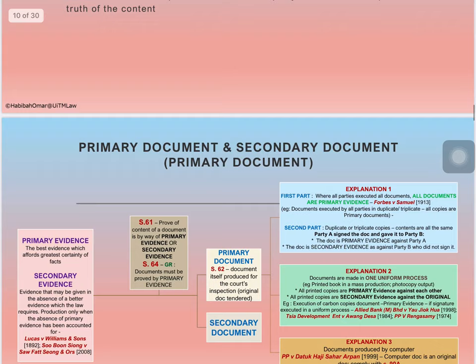Since it is important to tender a document — either primary or secondary — there is a need to know what is a primary document and what is a secondary document. The definition of a primary document is explained under Section 62 of the Evidence Act. Primary evidence is tendering the best evidence which affords greater certainty of facts, and in the context of documentary evidence, you are producing the original document — that is the document itself produced for the inspection of the court. The general rule under Section 64 is proof of document by primary evidence — documents must be proved by primary evidence except in the cases hereinafter mentioned.